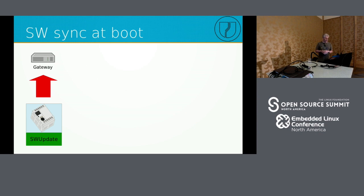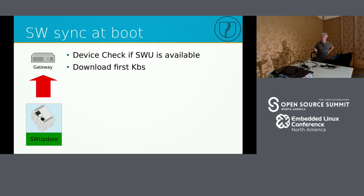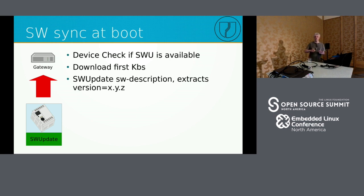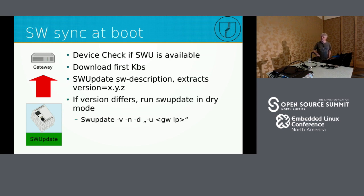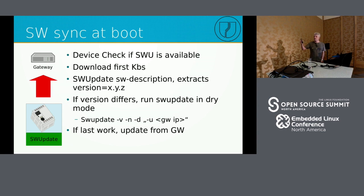For hardware replacement, the pull update service first checks if there is a gateway and a software package, downloads the first kilobytes containing the meta description, extracts the version, and if the version matches the running version it skips the rest. If not, it downloads everything and runs SWUpdate in dry-run mode — without installing anything — to verify the update package is not corrupted from a previously interrupted download. If the dry run passes, it then starts the actual update from the gateway.